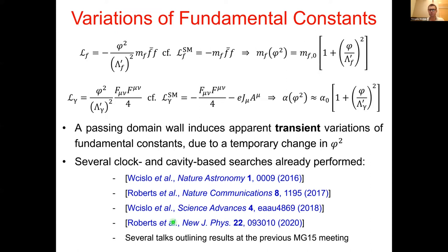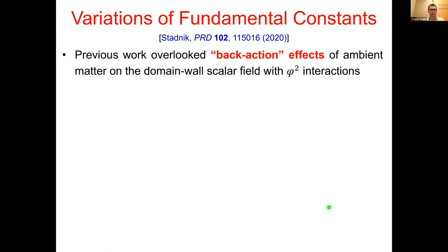Based on these proposals, a number of clock and cavity-based searches have been performed in recent years, described in publications and reported at the previous Marcel Grossmann meeting in Rome. However, it turns out there is significantly more to this story than was first assumed. In particular, in these earlier papers, a number of very important effects were overlooked — namely the so-called back-action effects of the ambient matter field on the domain wall scalar field in phi-squared interactions.